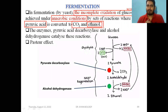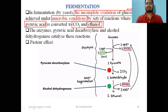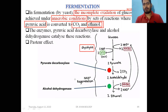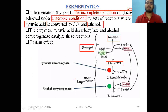Fermentation is majorly a two-step process. The first step is the glycolysis process and the second step is alcohol formation. One glucose molecule produces two molecules of pyruvic acid through glycolysis, and ATP formation also occurs.